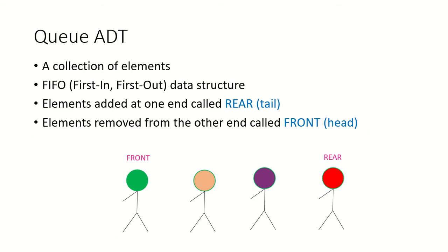If we think of queue as an abstract data type, we can think of it as a collection of elements. This is a first in first out data structure. This element is the person who has come in first, so he is at the front of the queue. Since he came in first, he would be the first one to leave the queue also.